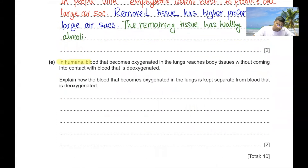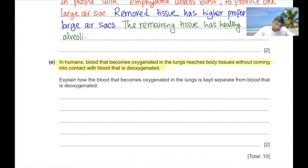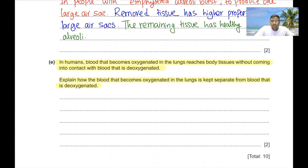Part E. In humans, blood that becomes oxygenated in the lungs reaches body tissues without contacting deoxygenated blood. The septum in the heart separates oxygenated and deoxygenated blood. Only oxygenated blood passes through the left side of the heart. Oxygenated blood is in the pulmonary vein and deoxygenated blood is in the pulmonary arteries, so they are kept separate.